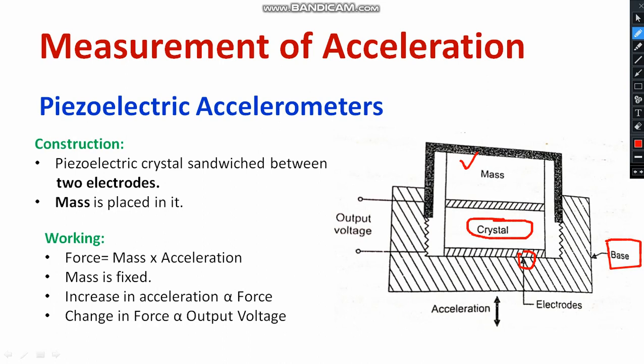Let us go ahead with the measurement. The crystal has been arranged between two electrodes — electrode number 1 and electrode number 2. It is just like a sandwich arrangement. The crystal, which I mark as C, has been placed in a sandwich arrangement between the two electrodes. Over the electrode, you are applying the mass with a certain kilogram.